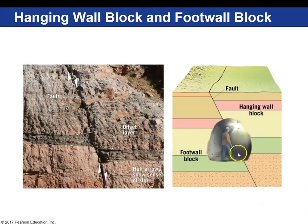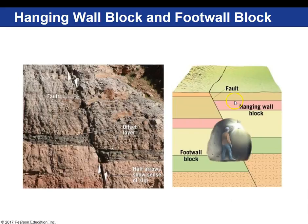Looking at a schematic, I like to describe the foot wall block as the block where, if you were to walk down inside the earth, your feet would be on. The hanging wall is the block where you would hang your lantern. Due to the orientation of this fault plane, your feet would have to be on this block. So in this case we have the hanging wall moving up relative to the foot wall — that is a reverse fault.